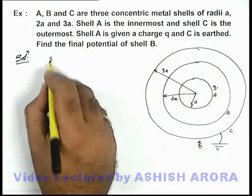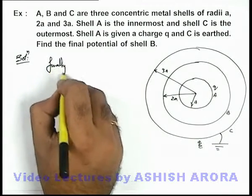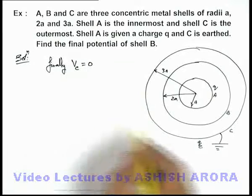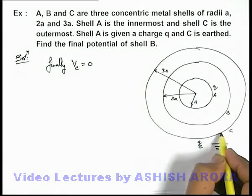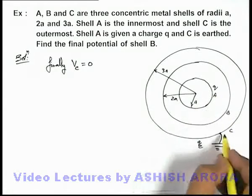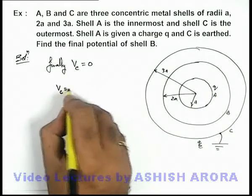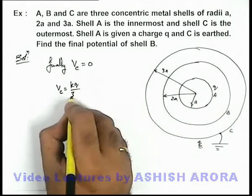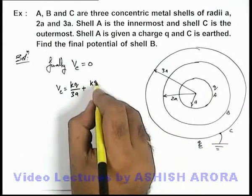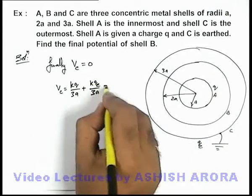So we can say that finally, as potential of shell C is equal to zero, it will be due to the charge on A as well as that on C. So due to A, charge on A, potential at C can be written as kq/3a, plus due to its own charge it will be kqₑ/3a. This should be equal to zero.